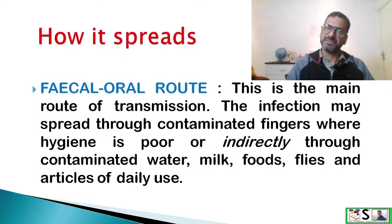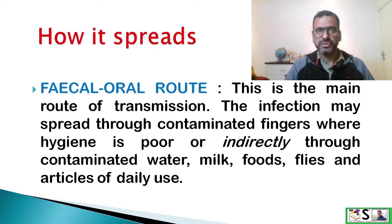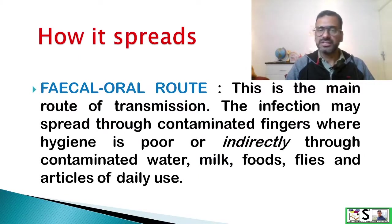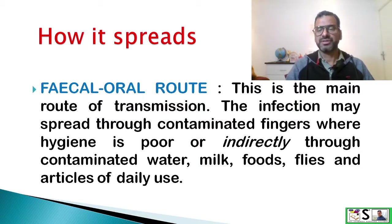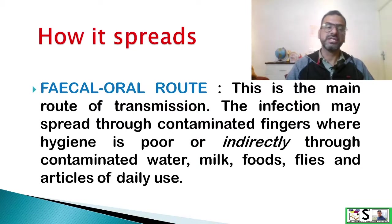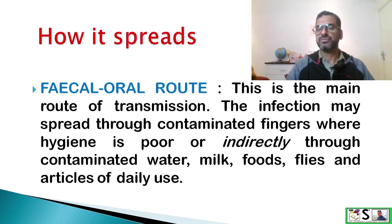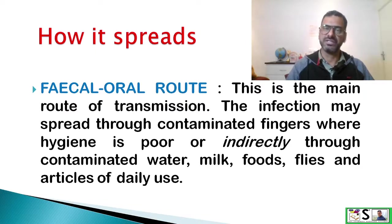How does it spread? The mode of transmission of polio is the feco-oral route. This is the main route of transmission. The infection may spread through contaminated fingers where hygiene is poor, or indirectly through contaminated water, milk, food, flies, and articles which they use.